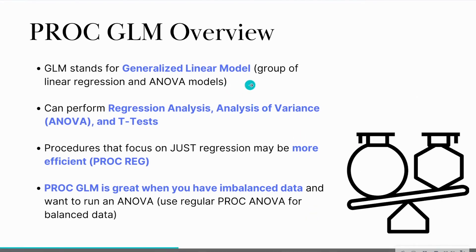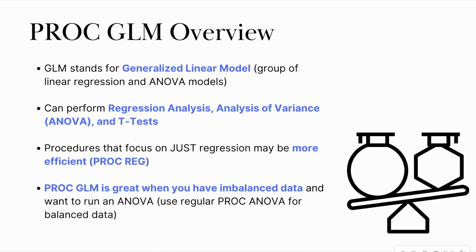GLM stands for Generalized Linear Model — it's a group of models that are either regression models or statistical tests such as ANOVA or t-tests. If you want to do ordinary least squares regression, PROC REG may be more efficient. For example, if you're doing a linear regression to predict price, just use PROC REG. PROC GLM is also great when you have imbalanced data and want to run an ANOVA — for instance, if you have a north store with 33 observations, a south store with 40, and a west store with 50.